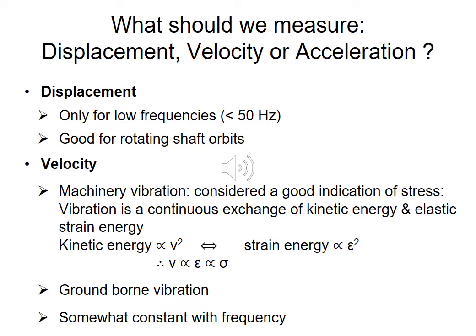On the next couple of slides we'll take a quick look at what the optimum parameter to measure would be and why. We have various vibration sensors that enable us to measure displacement, velocity, or acceleration. Displacement levels are high at low frequencies but become increasingly small as we increase in frequency up to the range of interest for human vibration — typically 20 Hz to 20 kHz. Beyond 50 Hz, displacement levels are very low and therefore difficult to measure. One exception is that displacement is useful for measuring rotating shaft orbits in rotating machinery using eddy current sensors for run-out and whirl measurements.